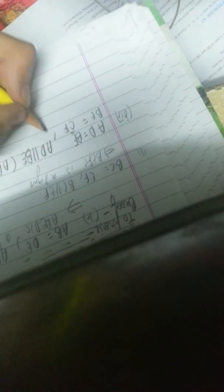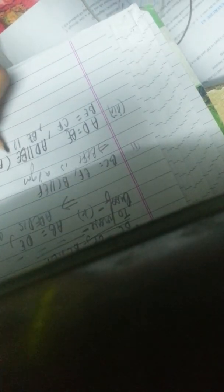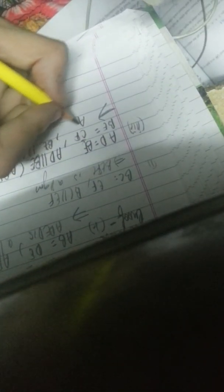Because we have already proved that ABED is a parallelogram, it means these will be equal and parallel. After that, we can also say that BE is equal to CF and BE is parallel to CF, because we have proved that BEFC is a parallelogram. From these two statements, we can say that AD is equal to CF and AD is parallel to CF.